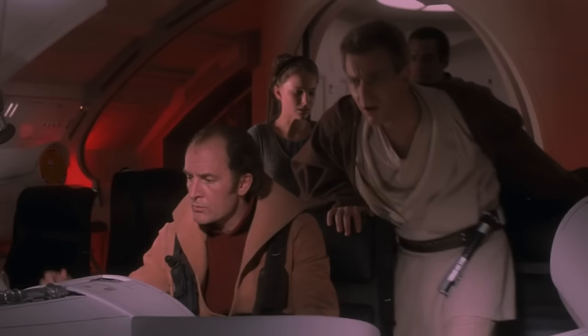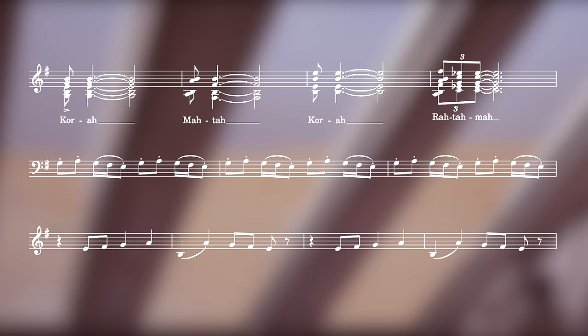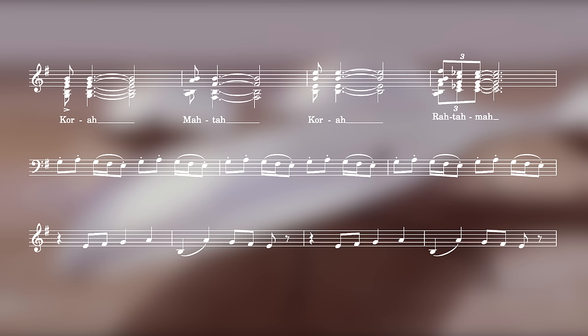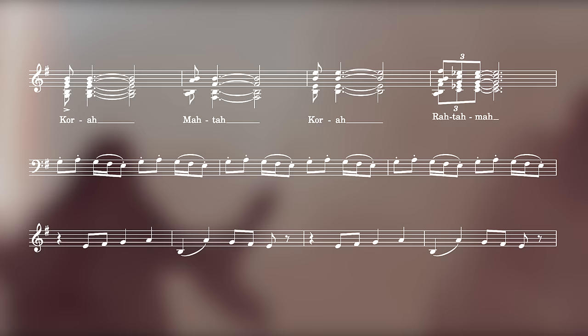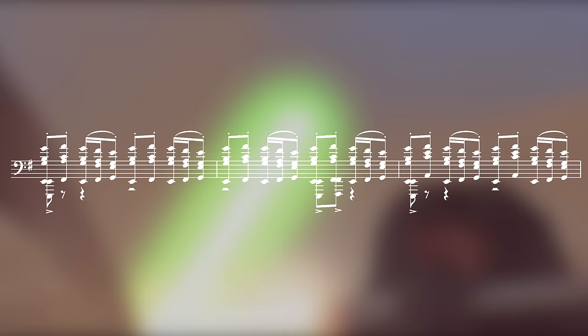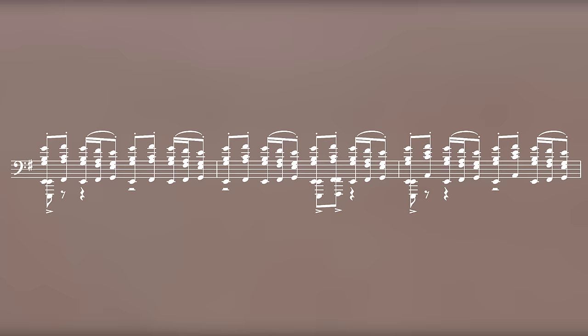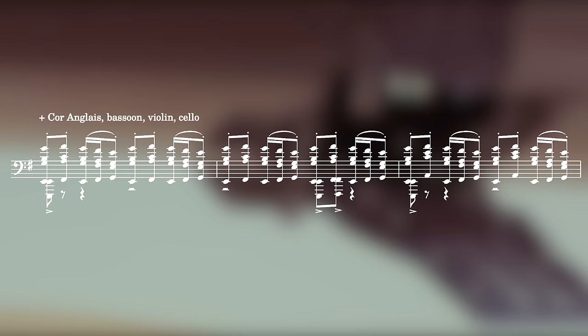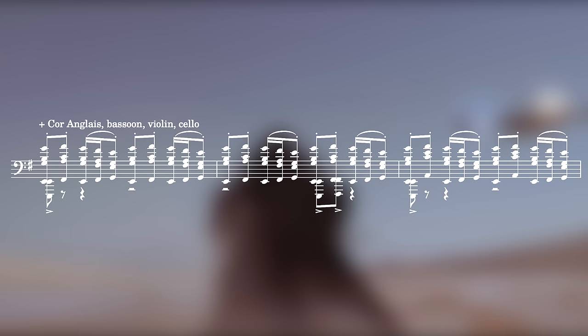Williams then sets up a series of variations of the three musical ideas we have just heard, building intensity through harmonic and rhythmic alterations, as well as through inventive use of orchestration. He starts by adding more parts to the ostinato, the bassoon and corps anglais, as well as the first and second violins and cellos.